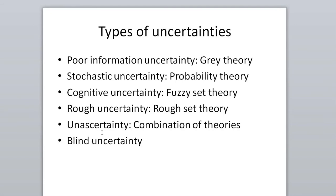Next is stochastic uncertainty. This is the kind of uncertainty when the possible outcomes of an event are known — for example, tossing a coin or throwing a dice. When tossing a coin, the outcomes are head or tail. Throwing one die gives six outcomes; throwing two dice together gives 36 outcomes. All possible outcomes are known, but the outcome of a particular trial is not known. In such cases we use stochastic uncertainty, and we mostly use probability theory to handle it.